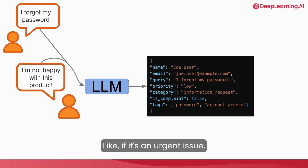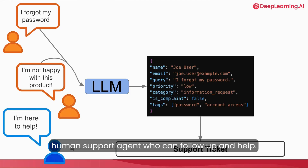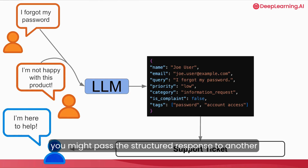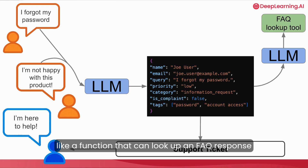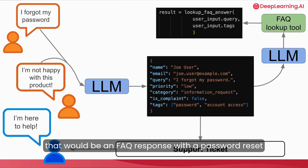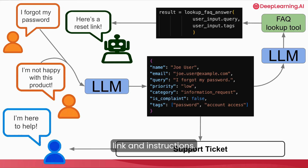If it's an urgent issue, you might create a support ticket and route it to a human support agent who can follow up and help. Or for a simple request like 'I forgot my password,' you might pass the structured response to another LLM agent that can call a tool — like a function that can look up an FAQ response that could help the user, such as a password reset link and instructions.